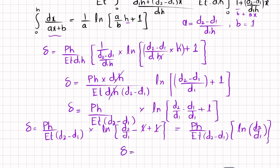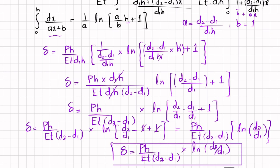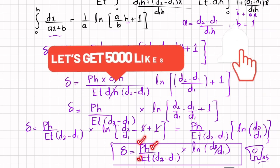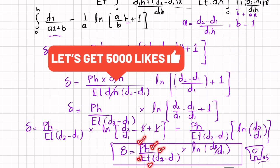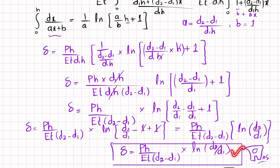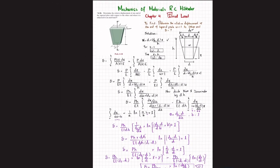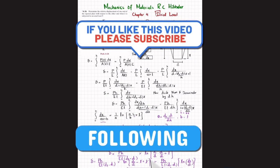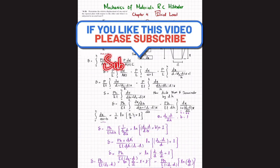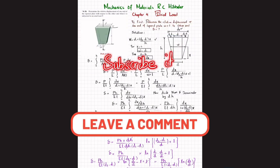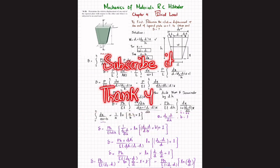So the final result is: deflection equals P times H divided by E times t times (D2 minus D1), times ln(D2/D1). This is the relative displacement of one end of the tapered plate with respect to the other end. If you know the values of H, P, E, t, D1, and D2, you can substitute them to get the total relative displacement. That was problem 4-24 — I hope you enjoyed and learned from this video. Subscribe to the channel and press the bell icon for notifications. Thank you for watching.